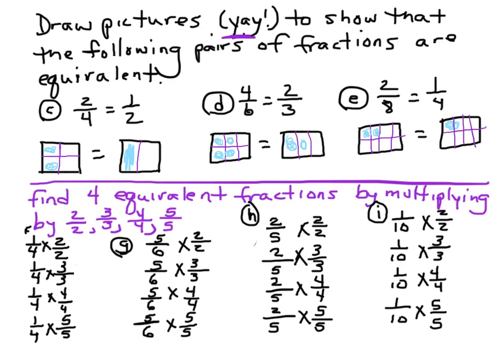Now what we're going to do is take a look at this next part: find four equivalent fractions for each fraction below by multiplying each fraction by two halves, three thirds, four fourths, and five fifths. So let's go ahead and do that. One fourth times two halves: one times two is two, four times two is eight. One times three is three, four times three is twelve. One times four is four, four times four is sixteen. One times five is five, four times five is twenty. And those are equivalent fractions.